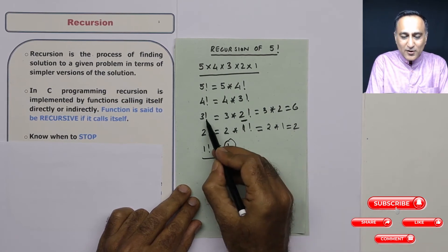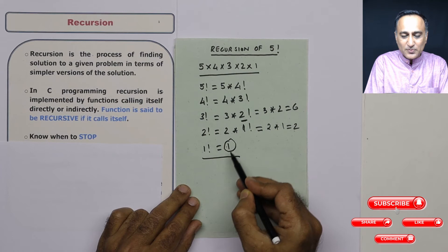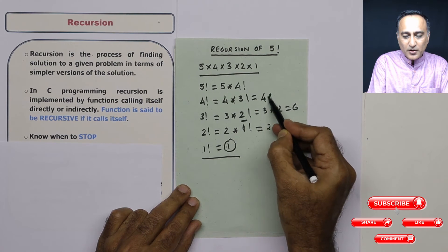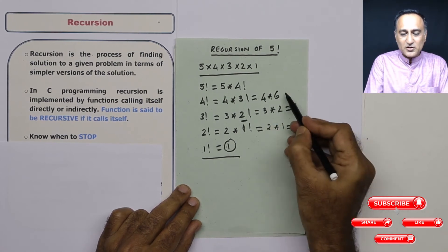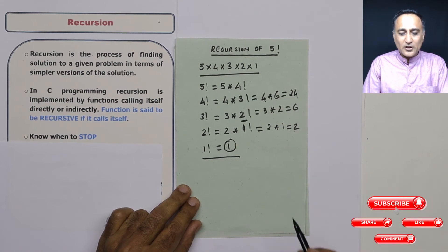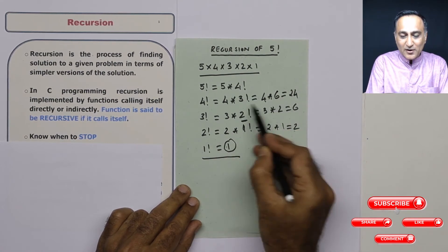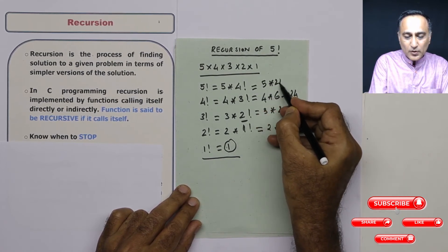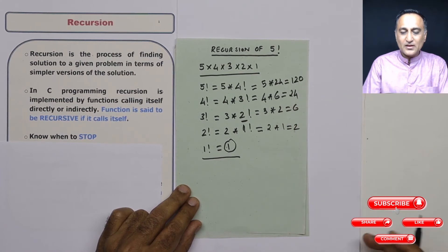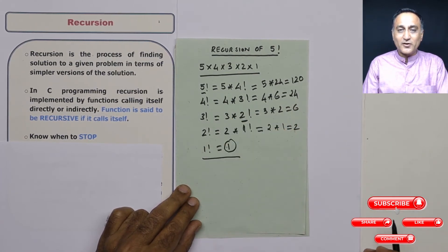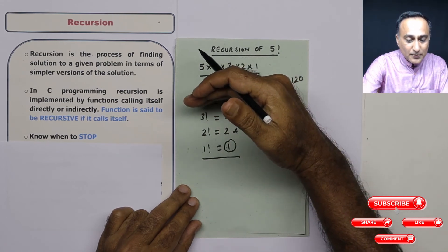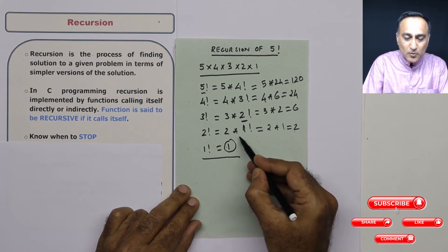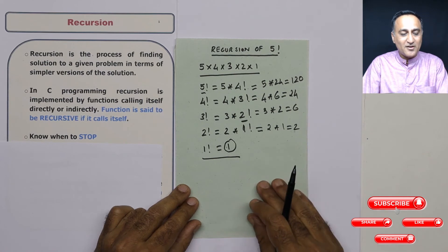Now look at the beauty. I know 3 factorial is 6 because starting from 1 I went all the way up. Now I substitute 3 factorial to get 4 × 6, which equals 24. Now I also know 4 factorial because I know 3 factorial. So this becomes 5 × 24, which is 120. So 120 is the answer to 5 factorial. I went about breaking the problem into sub-parts, went to the simplest problem, and starting from the solution of the simplest problem, combined back up to find 5 factorial.